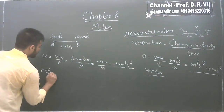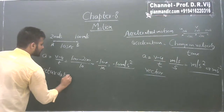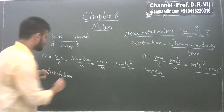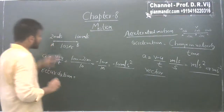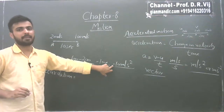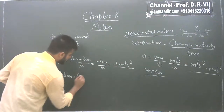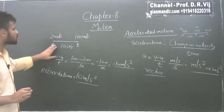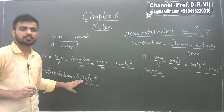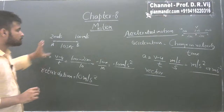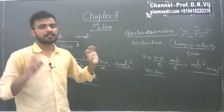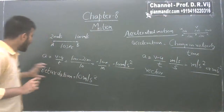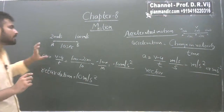Negative acceleration is also known as retardation. The definition of retardation: negative acceleration is retardation. If asked for the retardation of this body, we do not use the negative sign — we simply write it as 10 meters per second squared. So the definition of acceleration is: change in velocity per unit time. Negative acceleration is known as retardation.